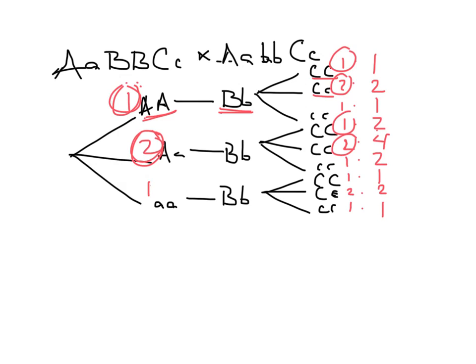The ratio would be 1 to 2 to 1 to 2 to 4 to 2 to 1 to 2 to 1. You need to write out each genotype: big A big A big B little b big C big C, big A big A big B little b big C little c, et cetera. That's how you calculate the genotypic ratio.